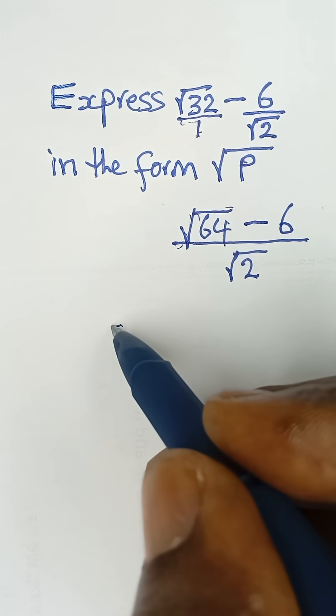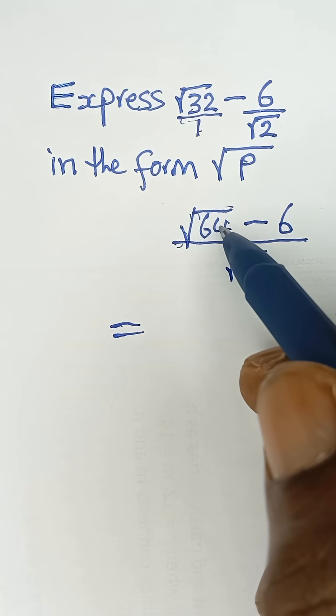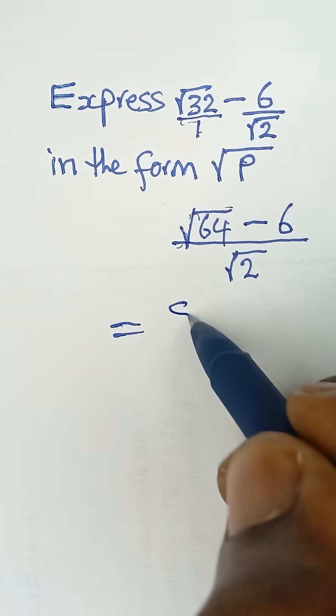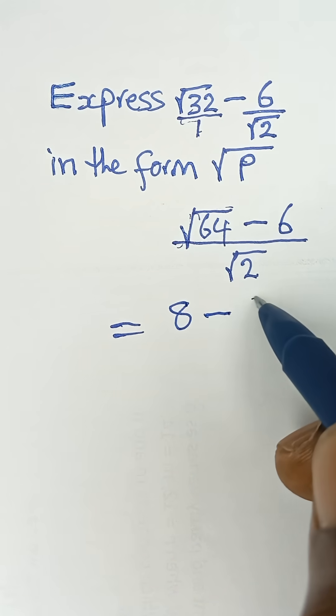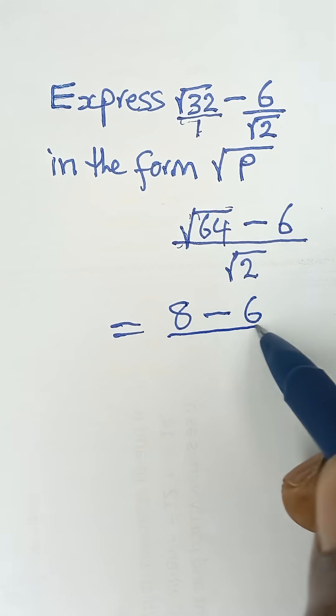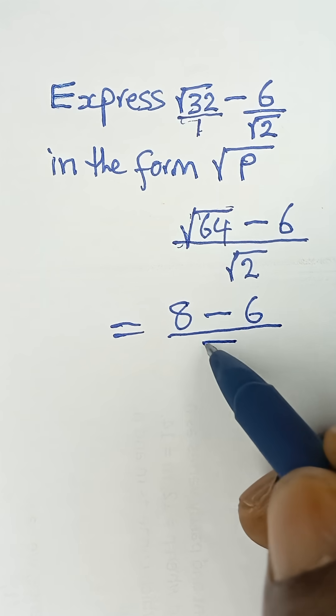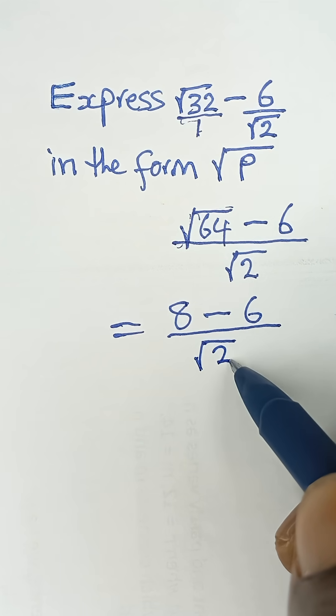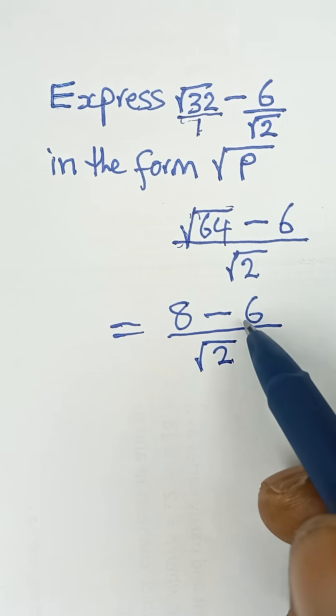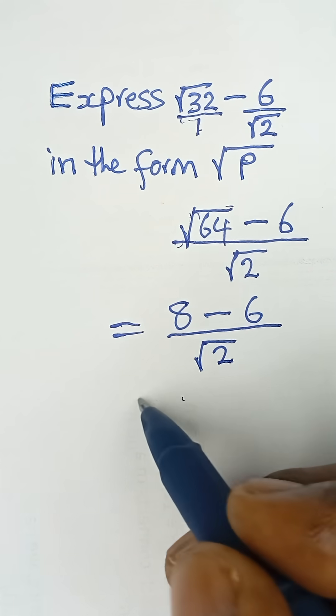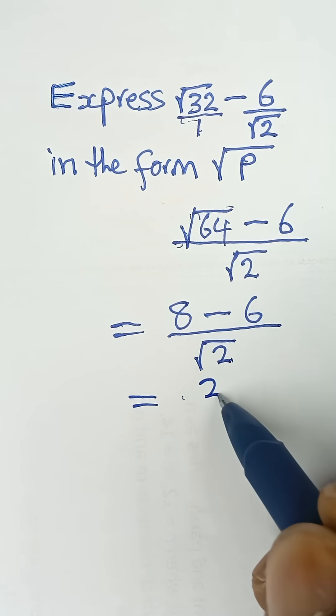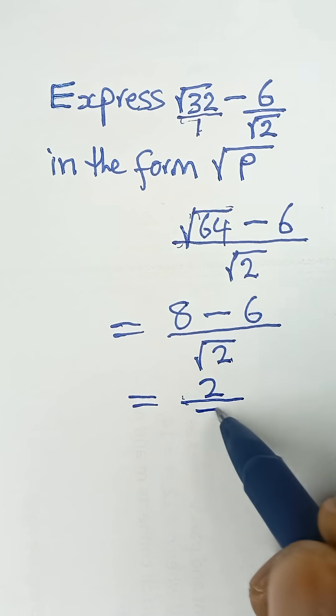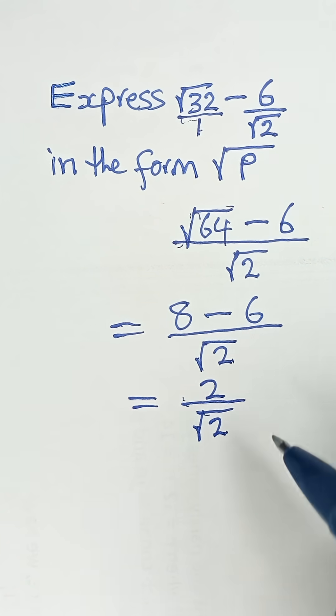And then what I'm going to have next is the square root of 64 is 8. 8 minus 6 all over √2. Then now, 8 minus 6 is 2. So we're going to have 2 as the numerator divided by √2 as the denominator. So we can rationalize.